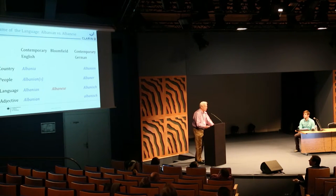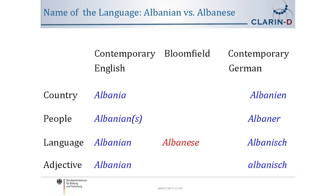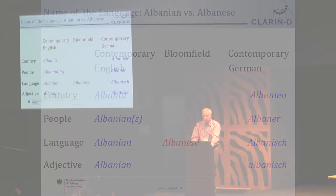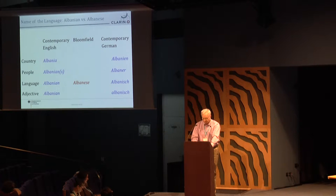The next slide gives you a snapshot of the relevant terms from contemporary English and German. In contemporary English the country is referred to as Albania and in German as Albanien. The people are referred to in English as Albanian or Albanians, and in German as Albaner. The language is referred to as Albanian and in contemporary German as Albanisch. So Bloomfield indeed sticks out from a contemporary usage point of view in using Albanese.